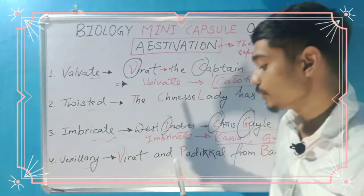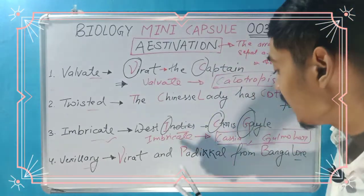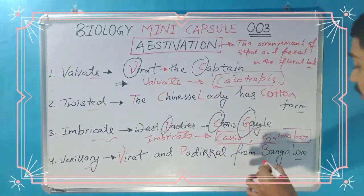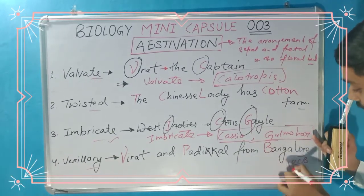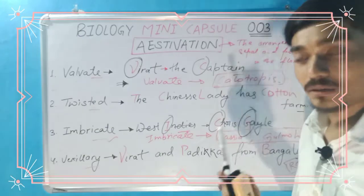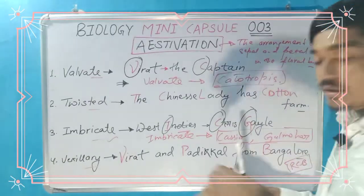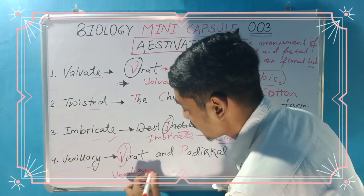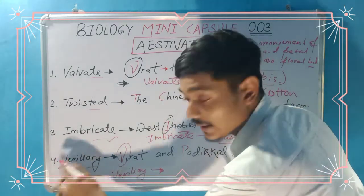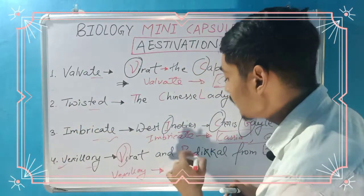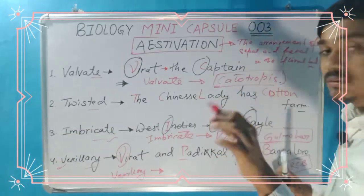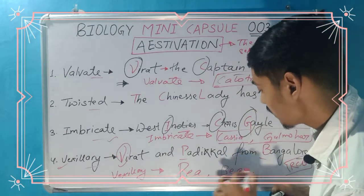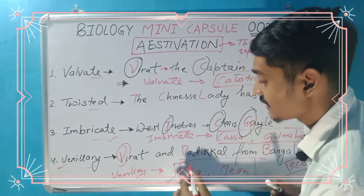Now the fourth one — vexillary. The mnemonic involves two players who belong to Bangalore — RCB, Royal Challengers Bangalore. These two players play for Bangalore. So the mnemonic shows V for vexillary, and the next two words show the examples: Bean and Pea. These two are the examples of vexillary.